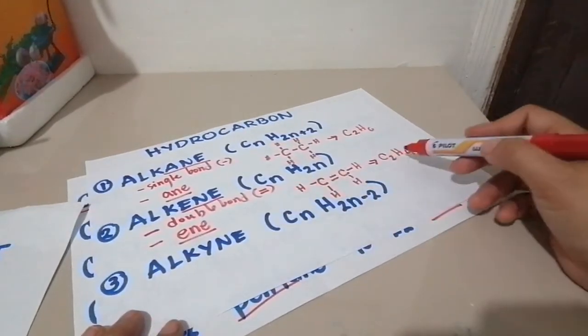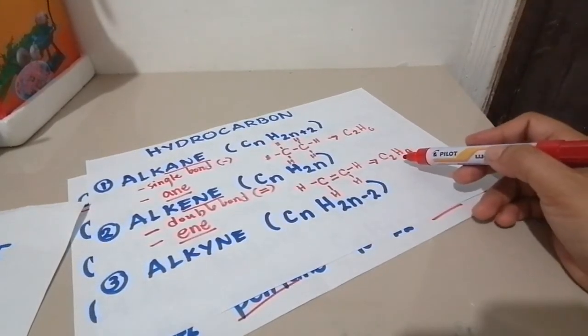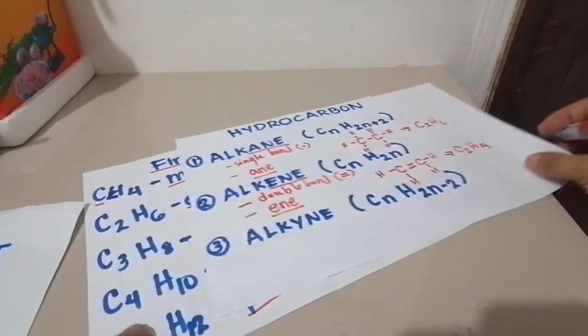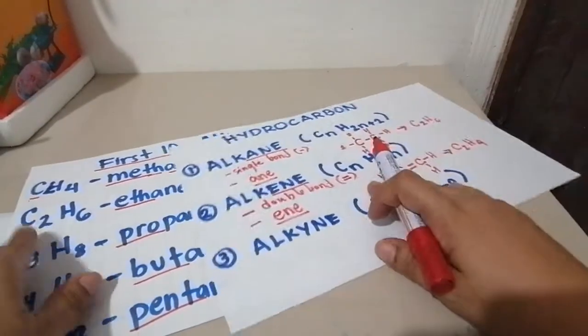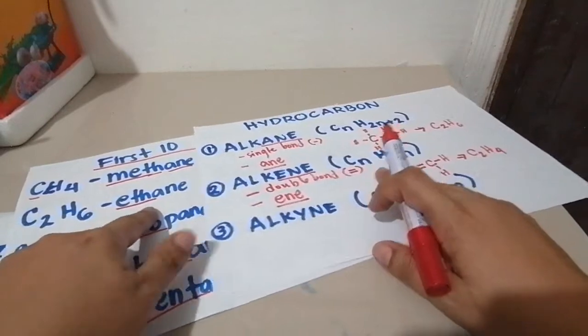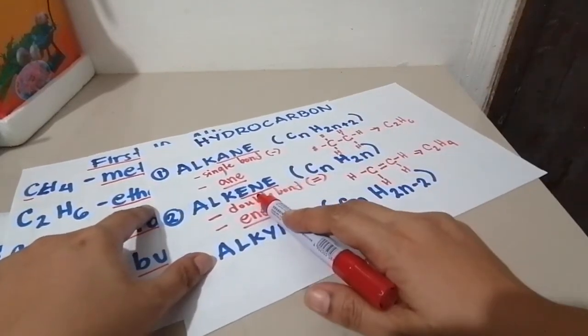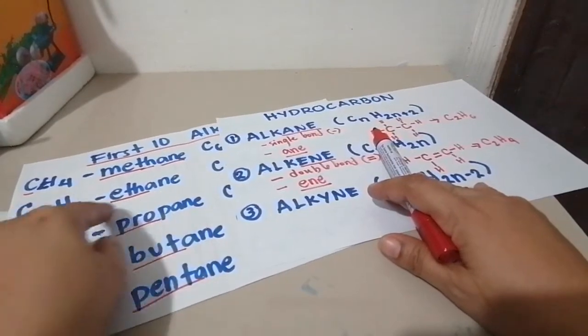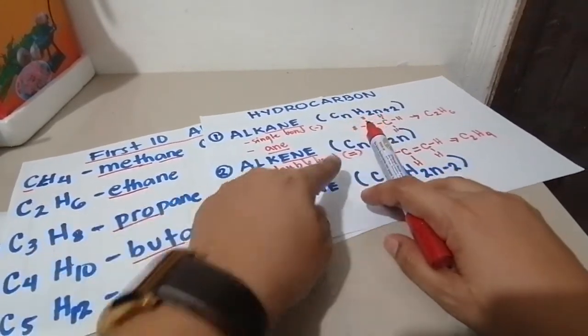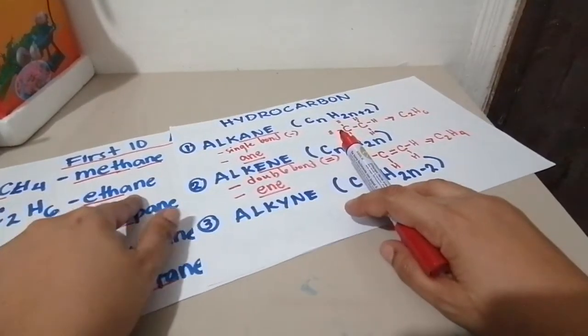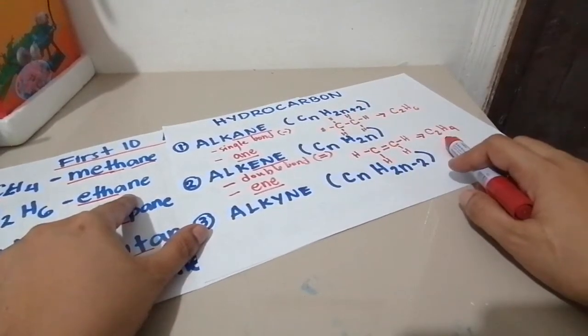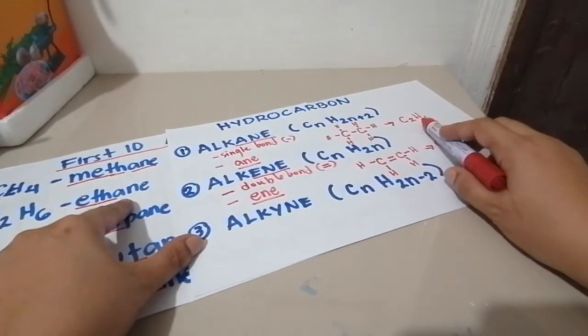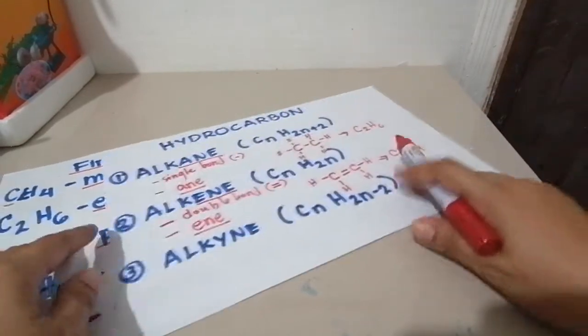This one, since it's double, there are only 2 carbons, so what's 2 carbons? It's ETH. Because this is alkene, it's not named ethane, but instead we name this as ethene because it's double bond. Ethene. This is ethane. This is ethyne.